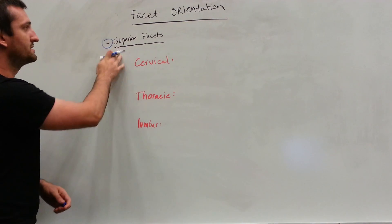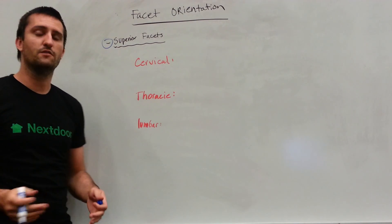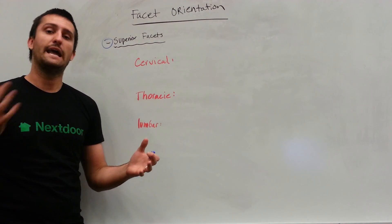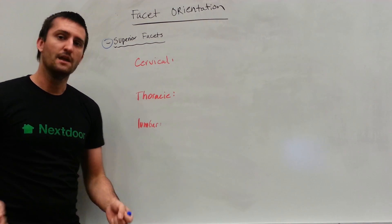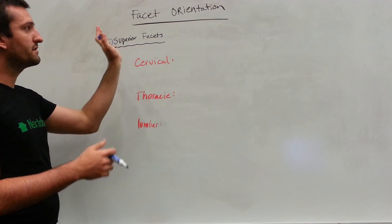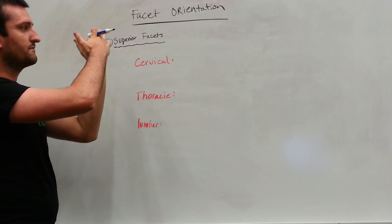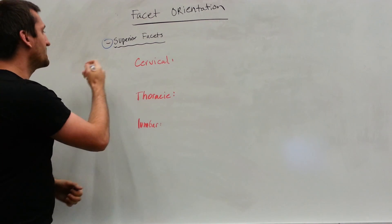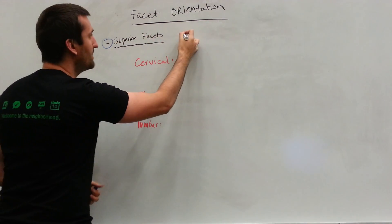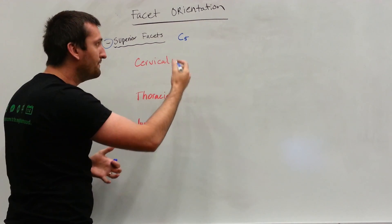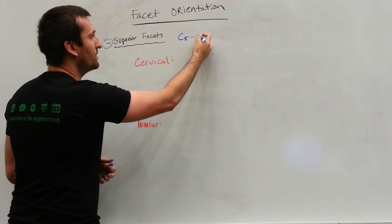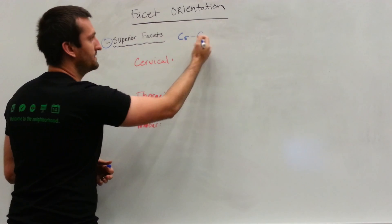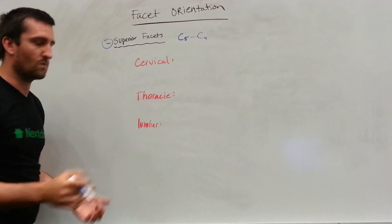We're going to be talking about the superior facets. Remember that vertebrae have both a superior and an inferior facet. It's where the superior facet meets the inferior facet of the vertebral level above it. So if we're talking about the superior facet of, let's just make up C5, the superior facet of C5 is going to meet the inferior facet of C4.